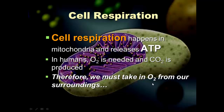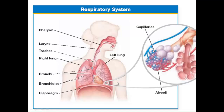We must take in oxygen from our surroundings. Here's another close-up diagram of what alveoli actually look like. At the end of the bronchioles and branches, you can see little sacs — alveoli — surrounded by capillaries. The colors are used to show high and low concentrations of oxygen gas.